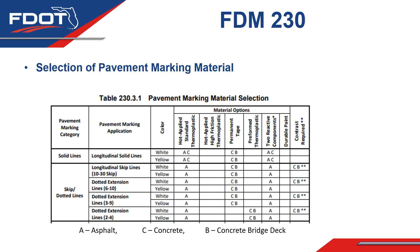A indicates asphalt pavement, C indicates concrete pavement, and B indicates concrete bridge deck. As an example, the materials allowed for white dotted extension lines with a 610 skip pattern for the three pavement substrates are as follows: hot applied standard thermoplastic and two reactive components for asphalt pavement; permanent tape for concrete pavement; and permanent tape for concrete bridge deck. The table also indicates when contrast markings are required.